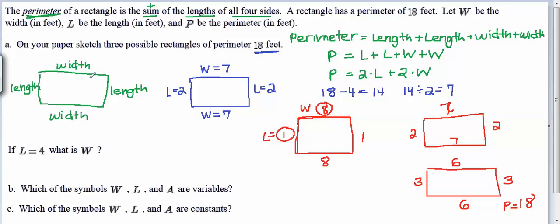So we've drawn a number of rectangles here, more than the three required. I've drawn four that have the required perimeter of 18 feet. The next phase of the problem says, well, if L is four, what will W be? So let's think about that.